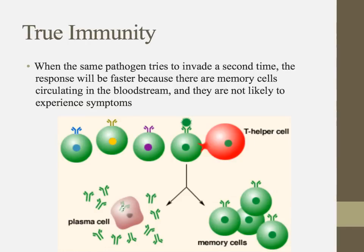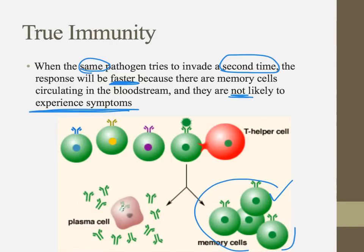After our primary immune response, if we get the same pathogen a second time — or 27th time — we're going to get a much faster response because we already have memory cells floating around in our bloodstream ready to produce those antibodies. If the pathogen invades a second time, we might not even experience any symptoms because antibodies are produced and kill the infection so quickly.